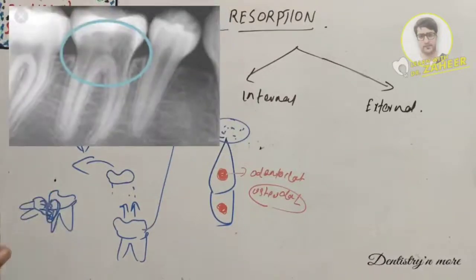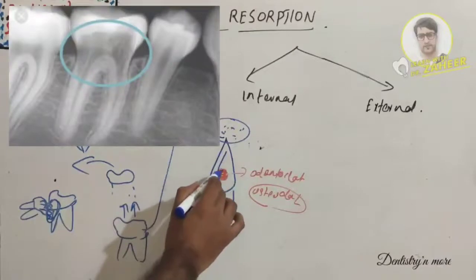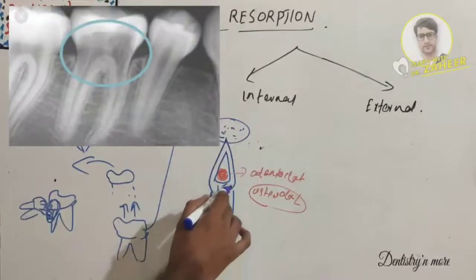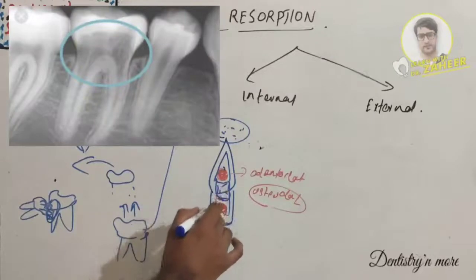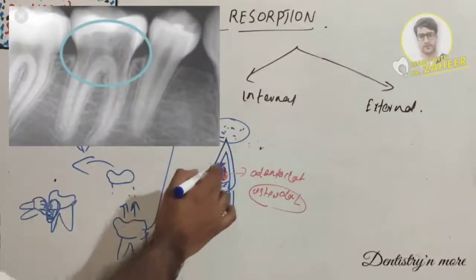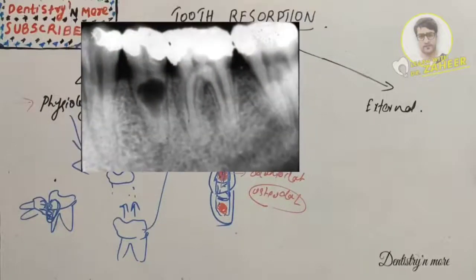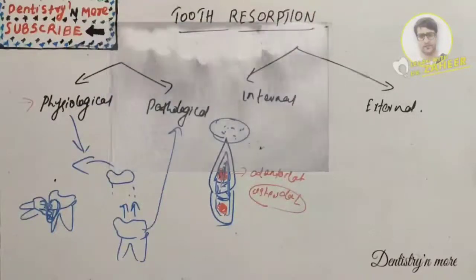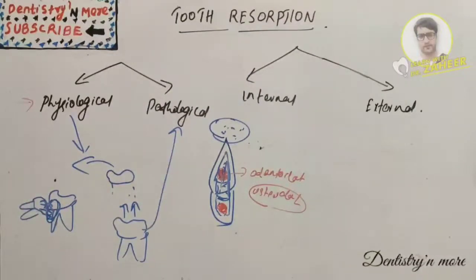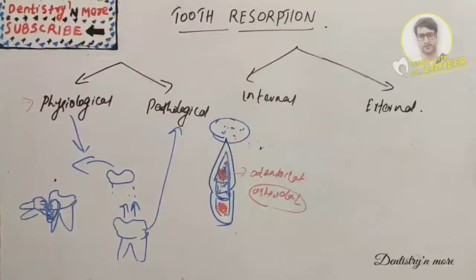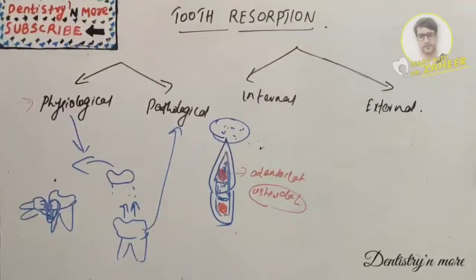In internal tooth resorption, the dentine and pulpal walls begin to resorb centrally within the root canal. This can be idiopathic but is usually secondary to pulpitis — pulpal infection ultimately leads to internal resorption. Internal resorption tends to be localized and usually affects the incisor teeth.